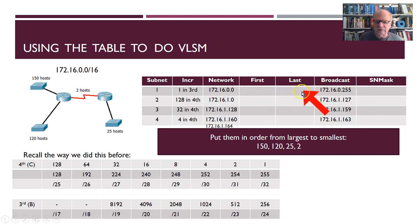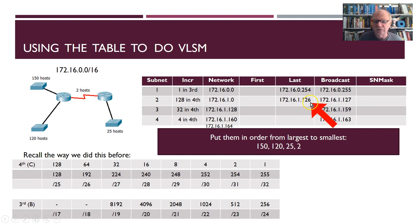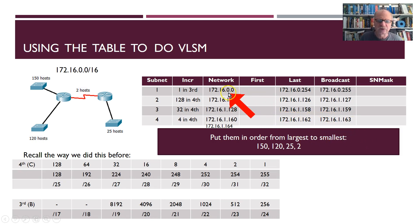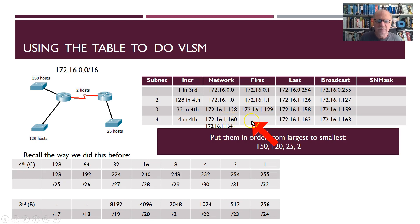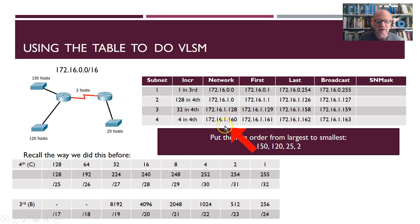Now I can fill these in. Starting with the last addresses first: broadcast 0.255 means last usable is 0.254; broadcast 1.127 means last usable is 1.126; broadcast 1.159 means last usable is 1.158; broadcast 1.163 means last usable is 1.162. For first addresses: 0.0 gives 0.1; 1.0 gives 1.1; 1.128 gives 1.129; 1.160 gives 1.161. Notice we only have two addresses — 161 and 162 — for the two hosts on that last subnet.